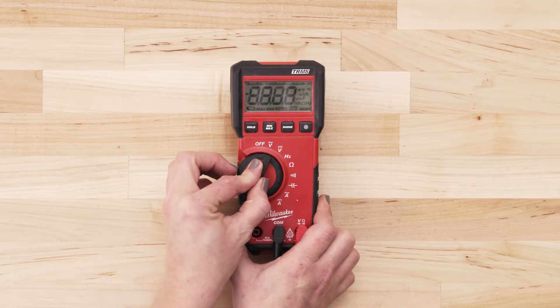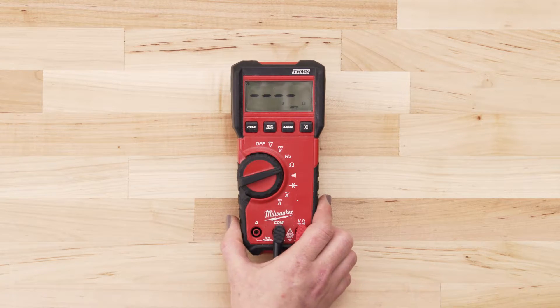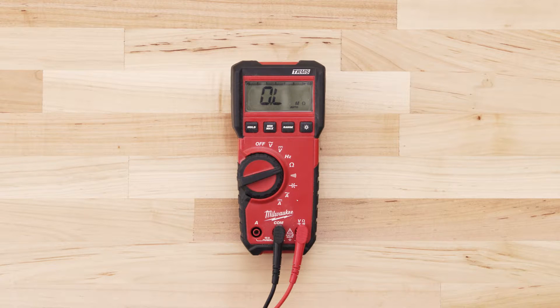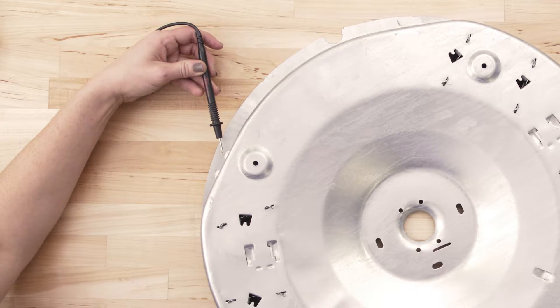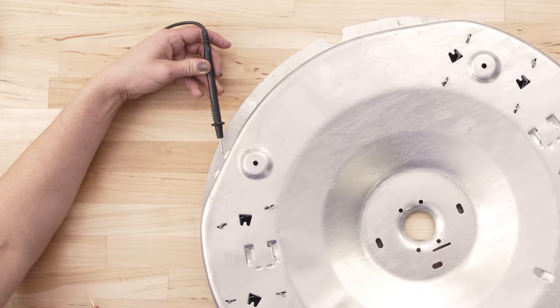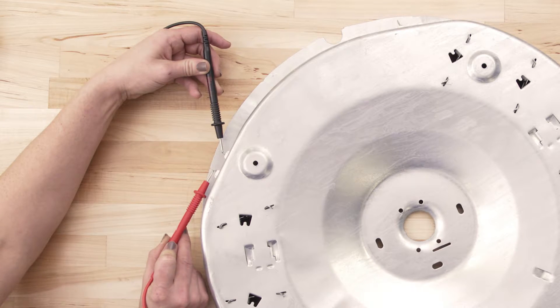If you're using a digital multimeter, also set the dial to the lowest ohms of resistance. To test for continuity, take the probe from the multimeter and touch it to one of the terminals. Now touch the second probe to the remaining terminal.